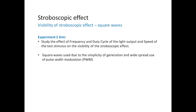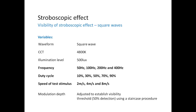Once we found how to measure the stroboscopic effect, we tried to see what it depends on — frequency, duty cycle, and speed of the test stimulus. We used square waves at 500 lux, for different frequencies ranging from 50 to 400 Hz, different duty cycles from 10 to 90 percent, and different speeds of the test stimulus. Modulation depth was adjusted to establish the visibility threshold — we asked people if they see the stroboscopic effect, yes or no, and based on their answer changed the modulation depth until they found the threshold, defined as the point where a person can see the stroboscopic effect 50 percent of the time.